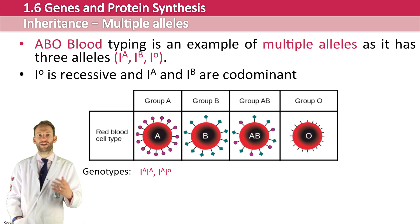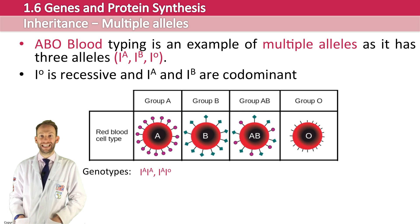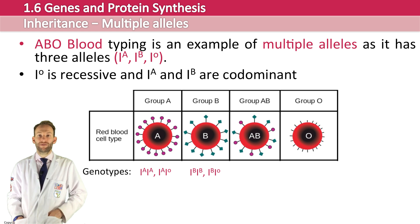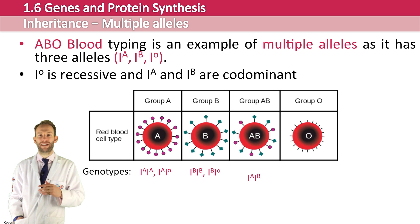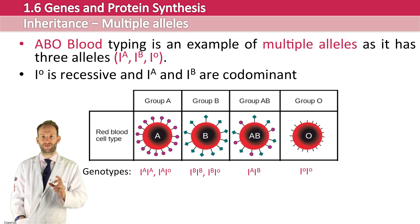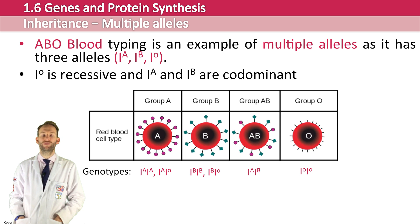Similarly for type B, you could be IBIB, or you could be IBIO. With blood group AB, you're going to inherit one of each — IA and IB. And with blood group O, you're going to inherit IO and IO. You have to be homozygous recessive to end up with blood type O.